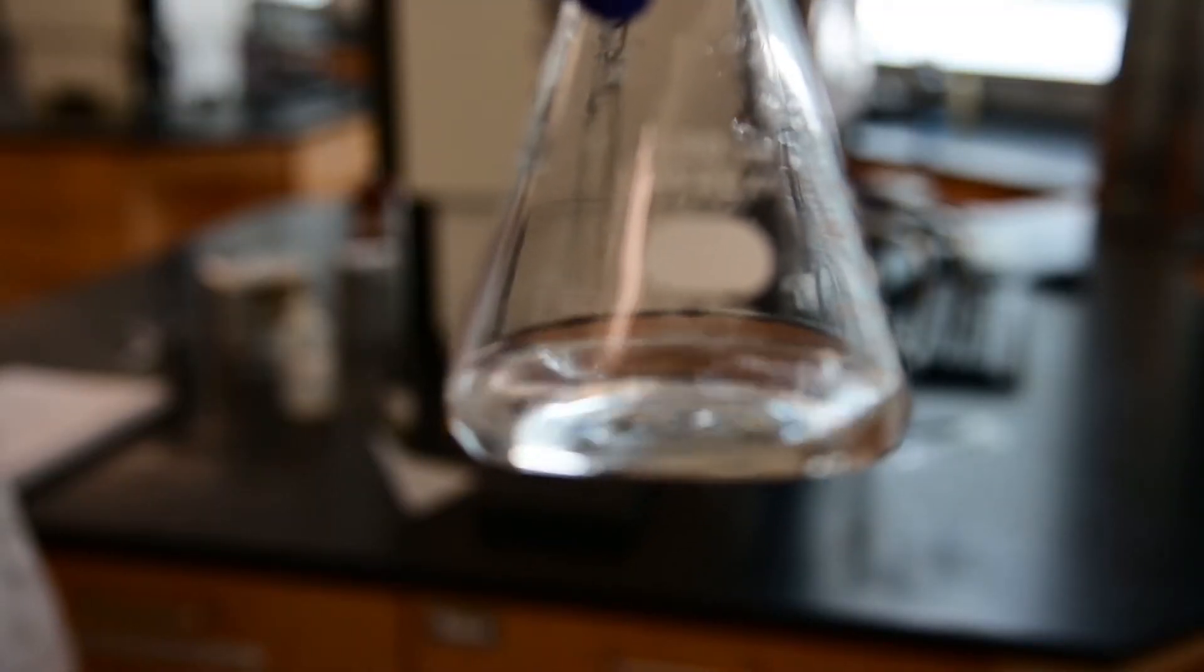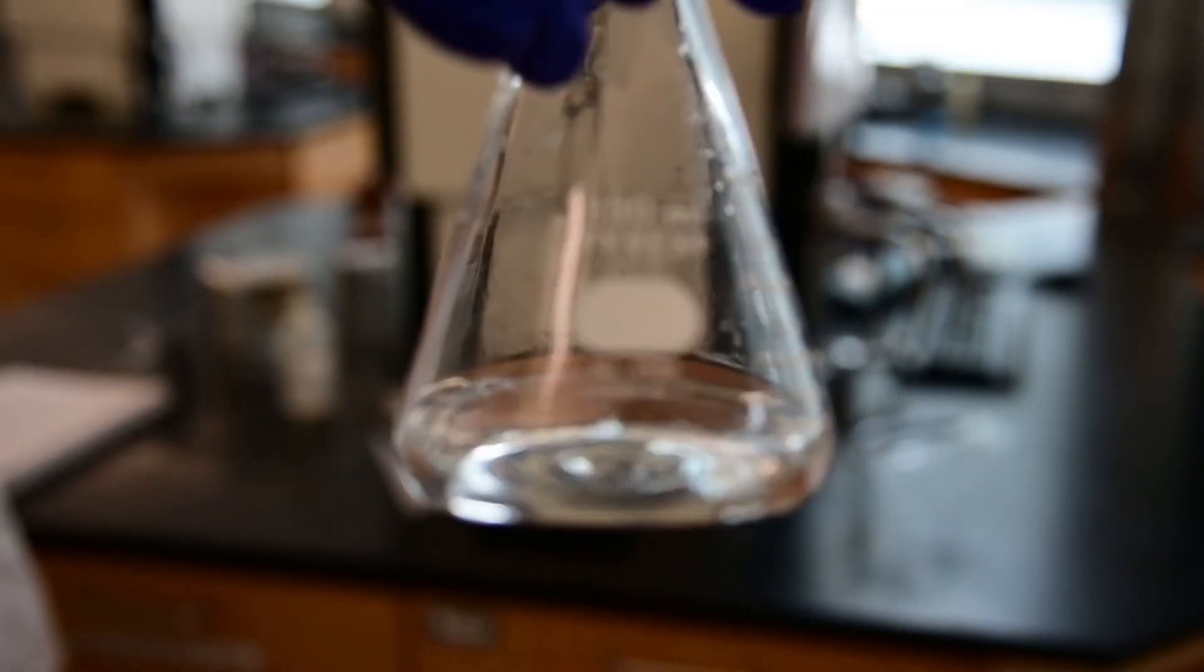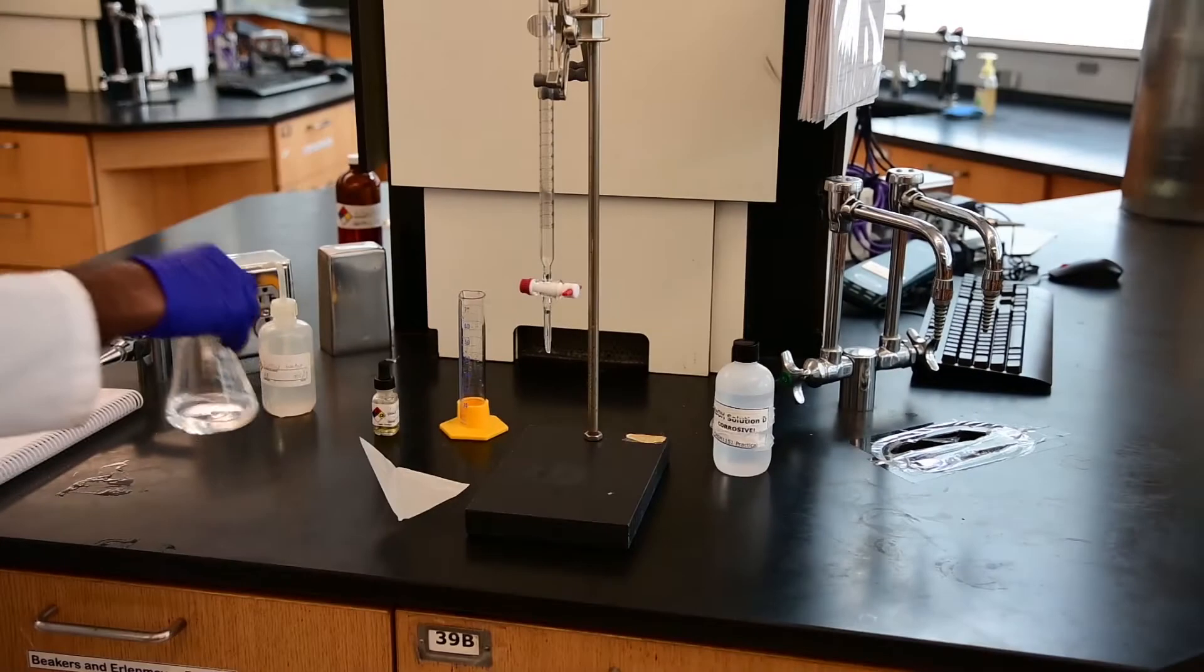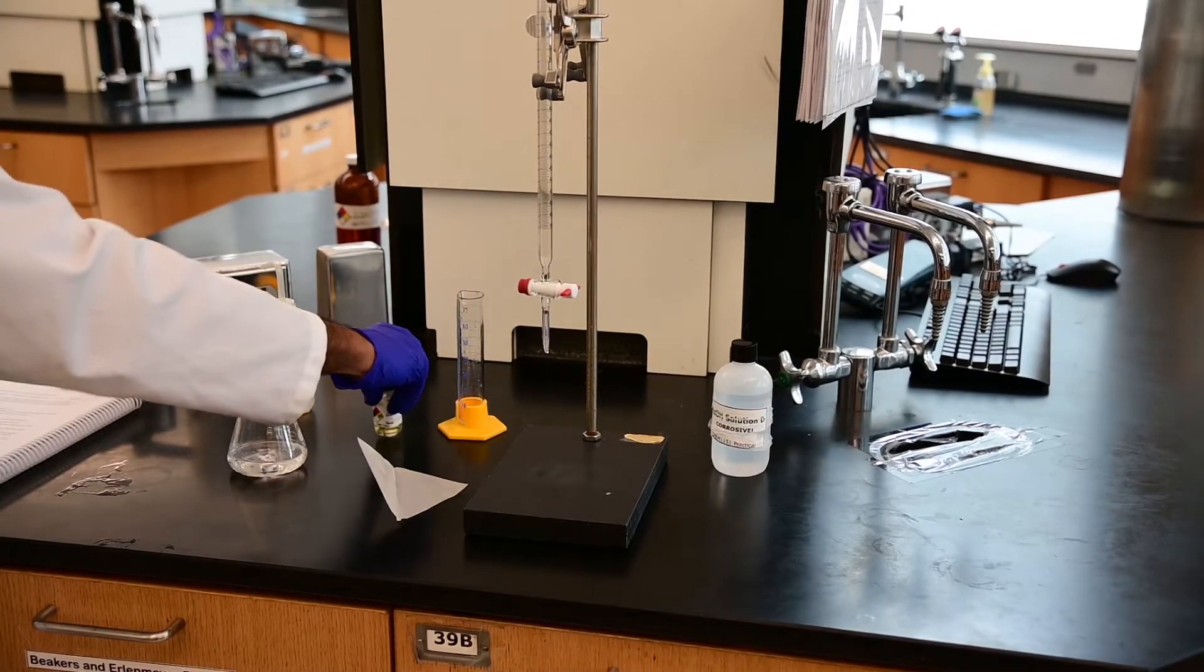There is no solid residue left in the bottom of the flask, so the flask is ready for use for the titration experiment. There is one vital thing we still need to do before we can start filling the burette, which is to add the acid-base indicator.